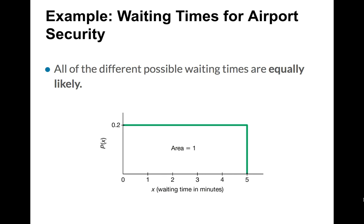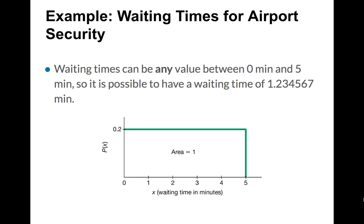We can see this rectangular image as our depiction of the distribution. The values can be any number between zero and five minutes — you could have a wait time of 1.234567 minutes. Time is a continuous thing, so we know this is a continuous random variable. If we were to say something like 'wait time to the nearest second or nearest minute,' that could make this a discrete random variable. But since there's no mention of rounding, this is a continuous random variable.